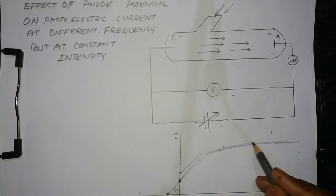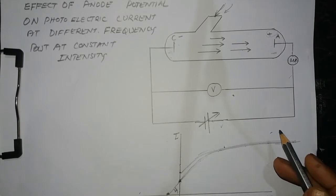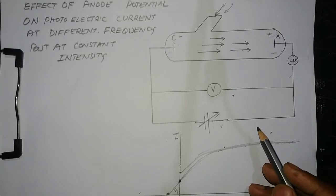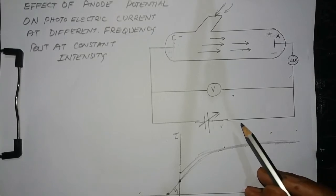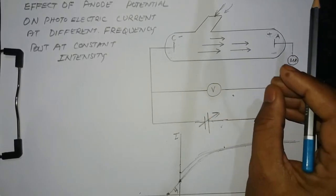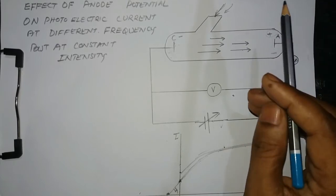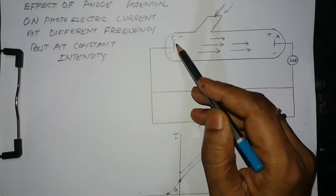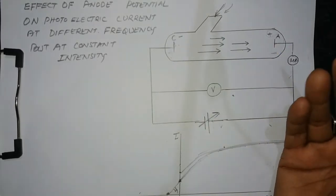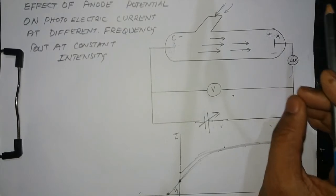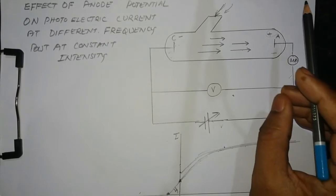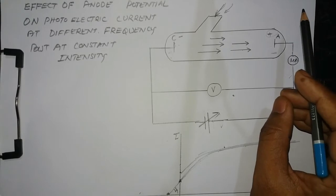But notice that the saturation current is not increasing when the frequency is increased. When you increase the frequency, the number of photons per second remains the same — it is not increasing with increasing frequency. Therefore, the number of electrons emitted per second from the cathode remains the same, and so saturation current does not increase.